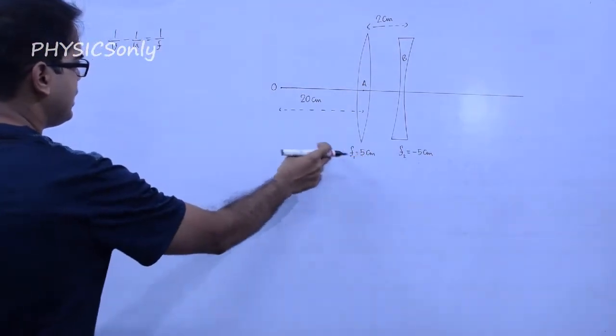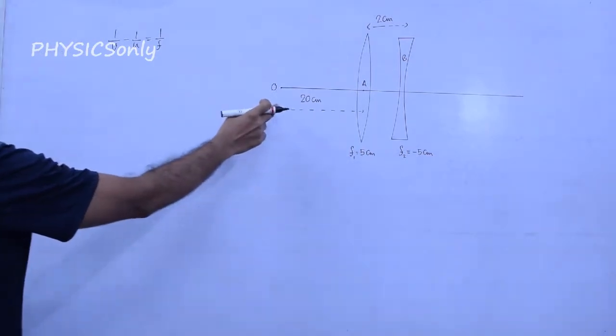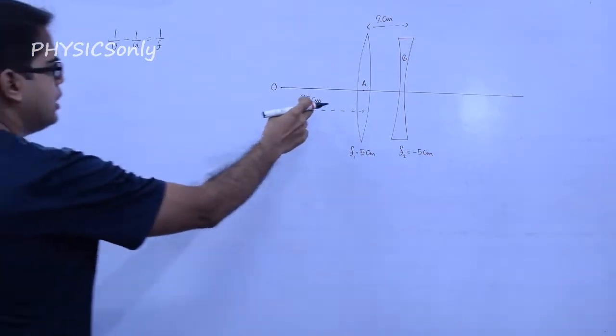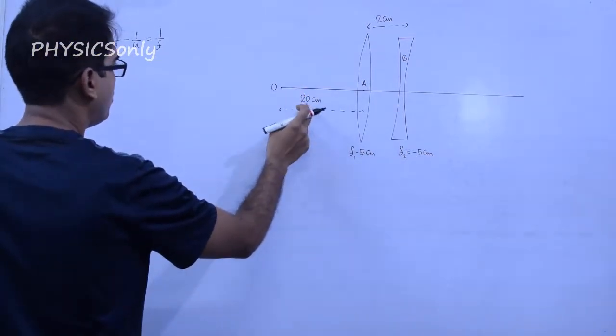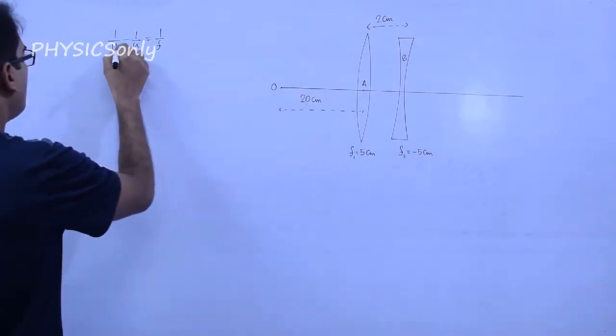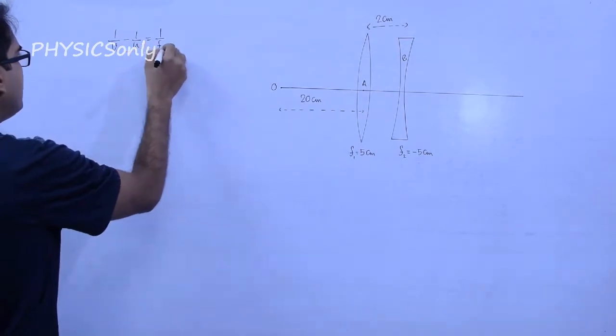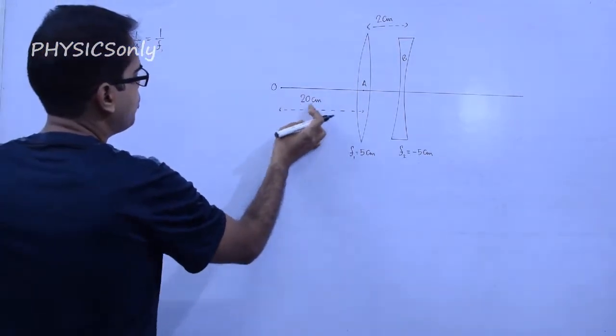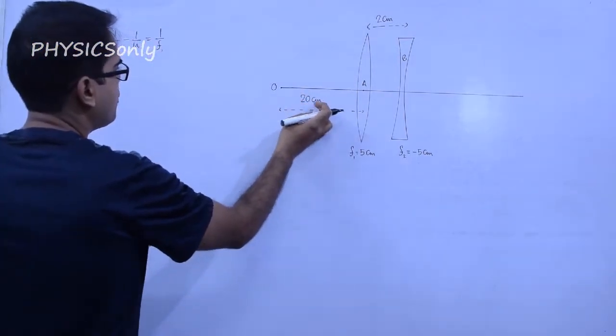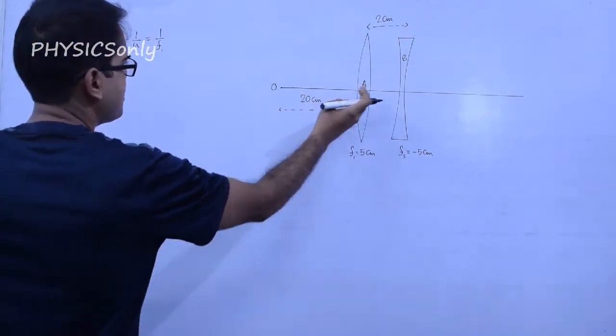For the first lens, U1 is the object distance. We denote the variables as U1, V1, F1. The object distance U1 is 20 cm from the first lens.